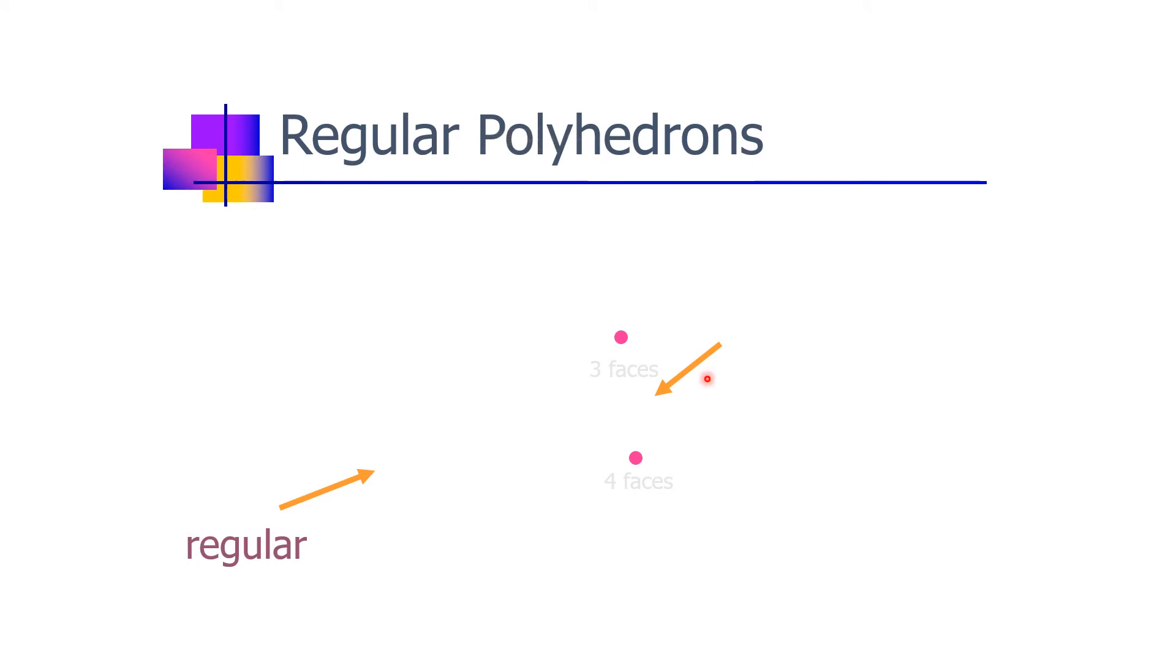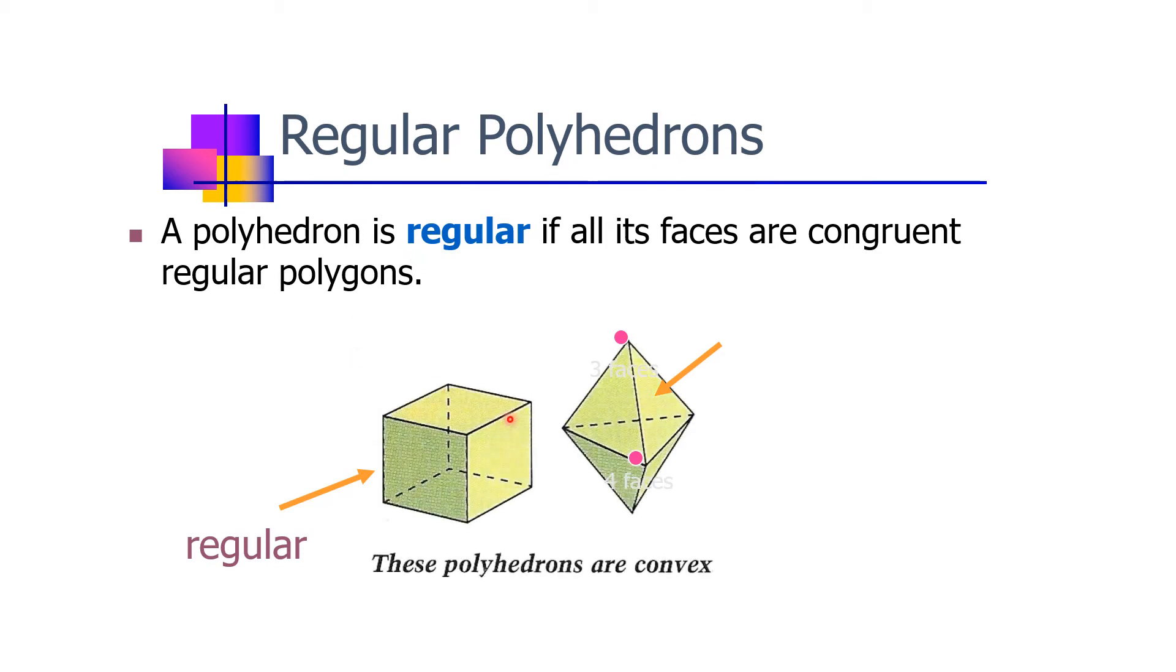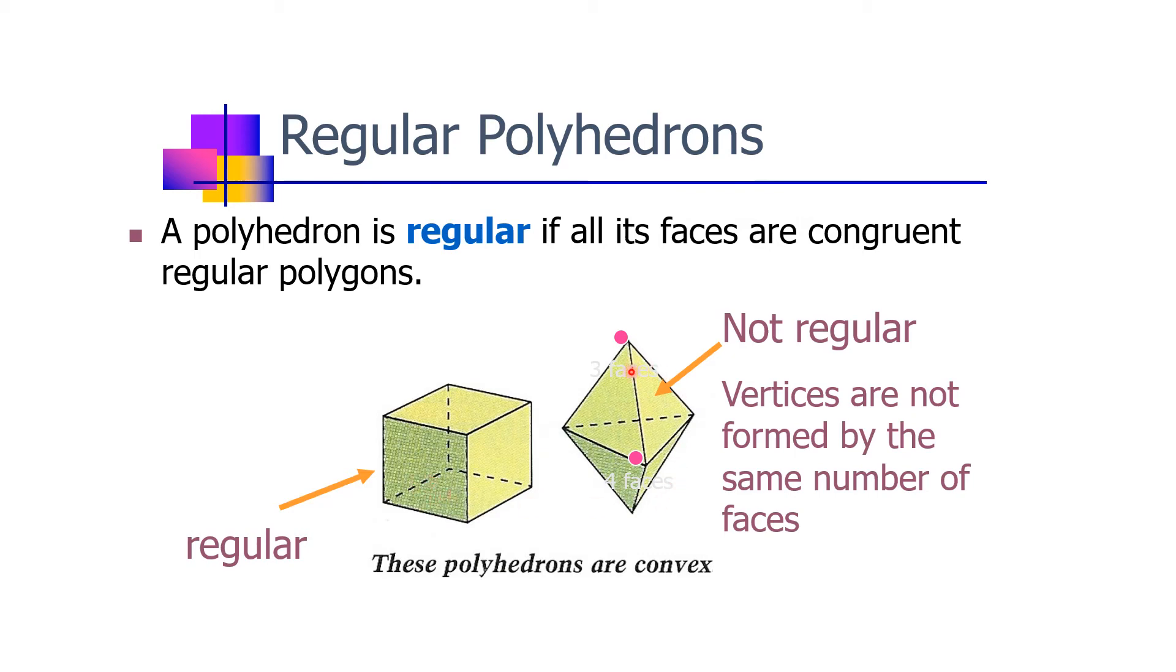We have regular polyhedrons. A polyhedron is regular if all its faces are congruent regular polygons. So we have here these polyhedrons are convex, but this one is regular, and this one is not regular because vertices are not formed by the same number of faces.